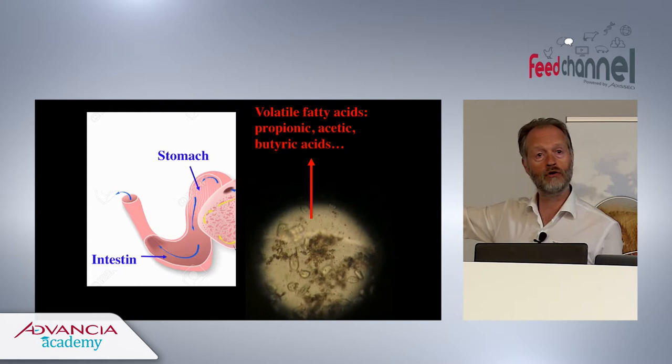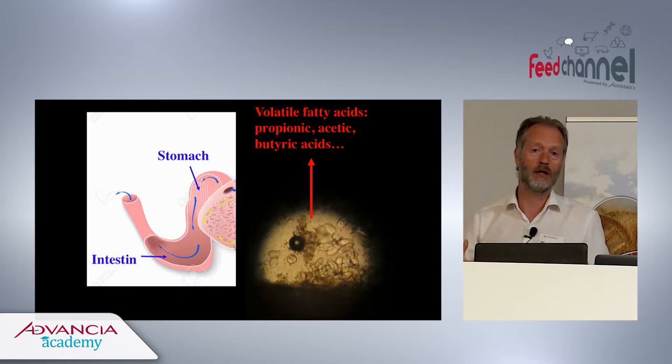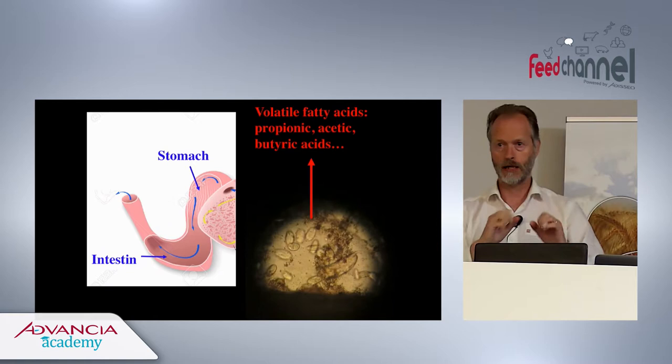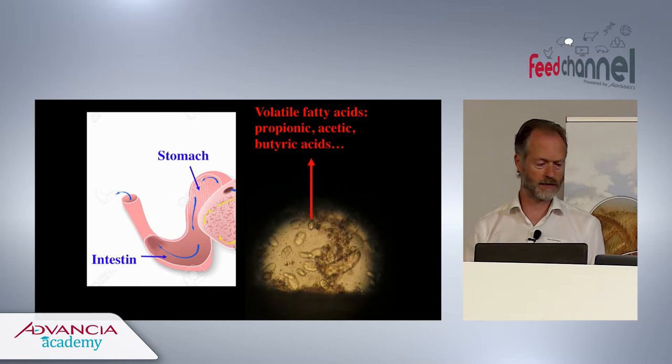These volatile fatty acids represent 85% of the energy the cow is using. The glycemia, as you may know, in the cow is very low — it's not sugar which is providing energy to the cell. It's those wastes of the microbes. So already we have solved the problem of how this animal, which is not able to digest grass, is obtaining energy: just microbial wastes.